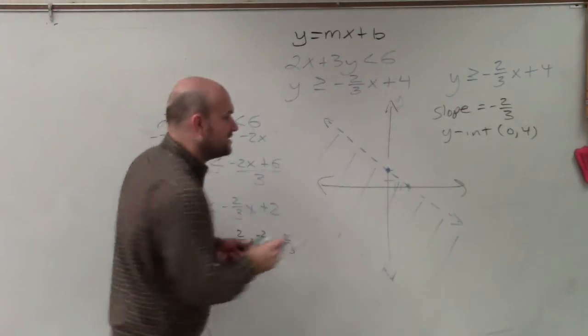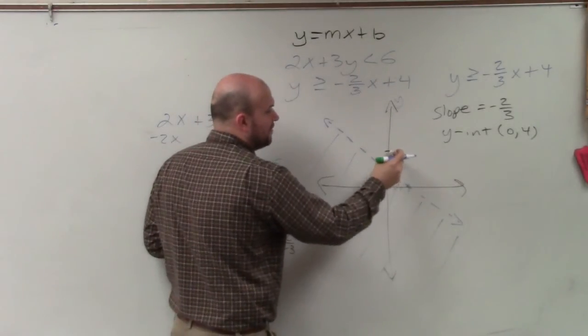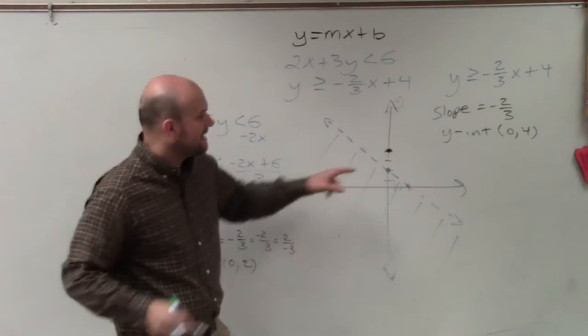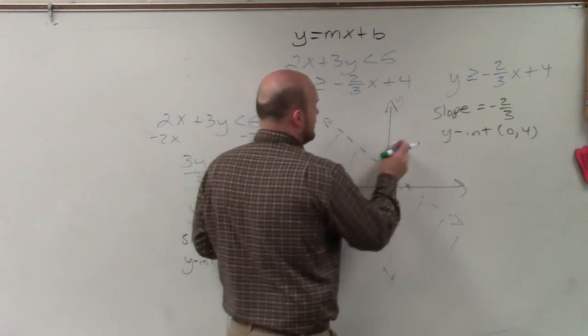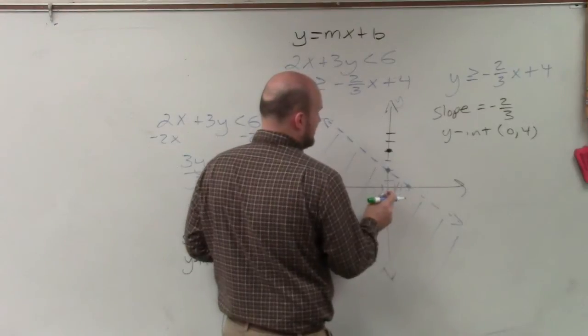So now I plot my y-intercept. 1, 2, 3, 4. And instead of going down 2 to the right 3 like I did before, I'm going to go up 2 to the left 3. 1, 2, 3.